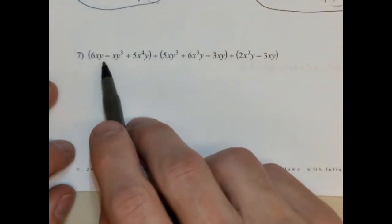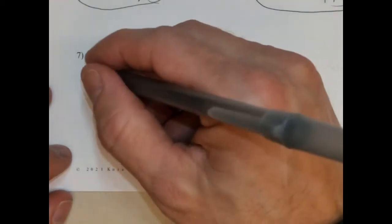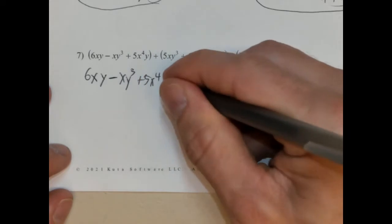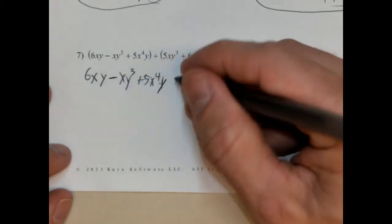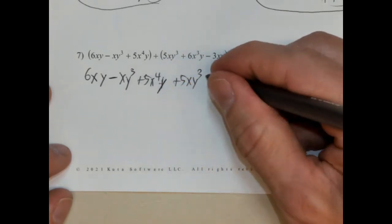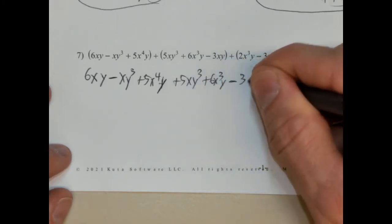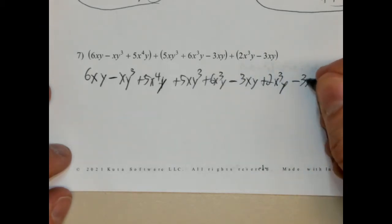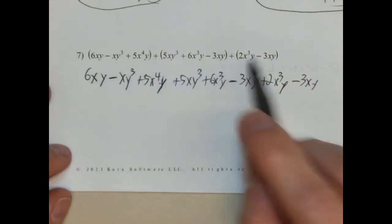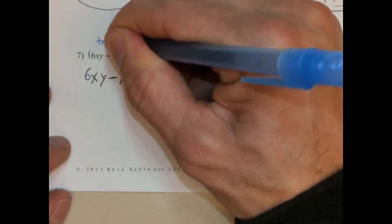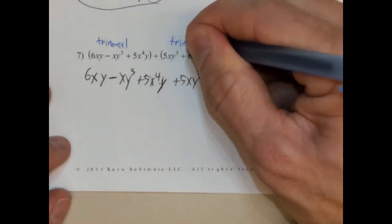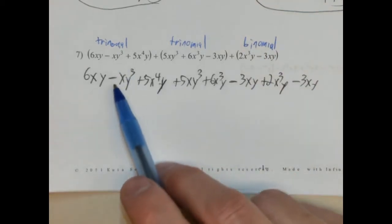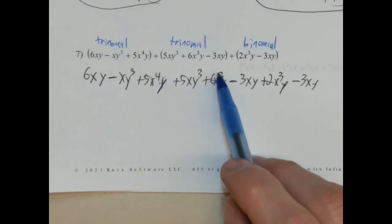And this is interesting — we have a trinomial, a trinomial, a trinomial, all plus signs, so we don't have to change any signs. But this could get a little messy. So: 6xy minus xy cubed plus 5x to the 4th y, plus 5xy cubed plus 6x cubed y minus 3xy plus 2x cubed y minus 3xy. So we have a trinomial, trinomial, and a binomial. Let's label that — trinomial, trinomial, binomial. I'm just going to make sure I wrote these correctly, because all it takes is one simple mistake here and it throws everything off.